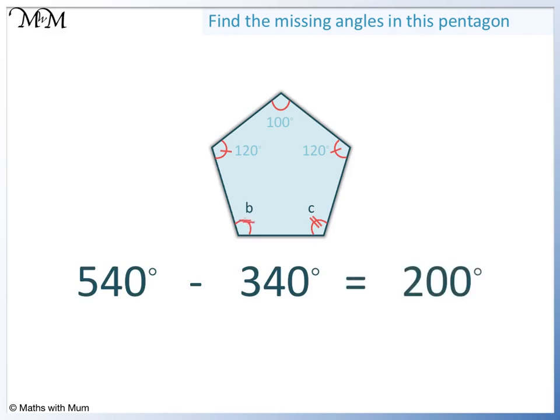540 take away 340 equals 200. Angle B and C are the same size, and make a total of 200 degrees. To find out what each angle is worth, we can divide 200 by 2. 200 divided by 2 equals 100. So B and C are both 100 degrees.